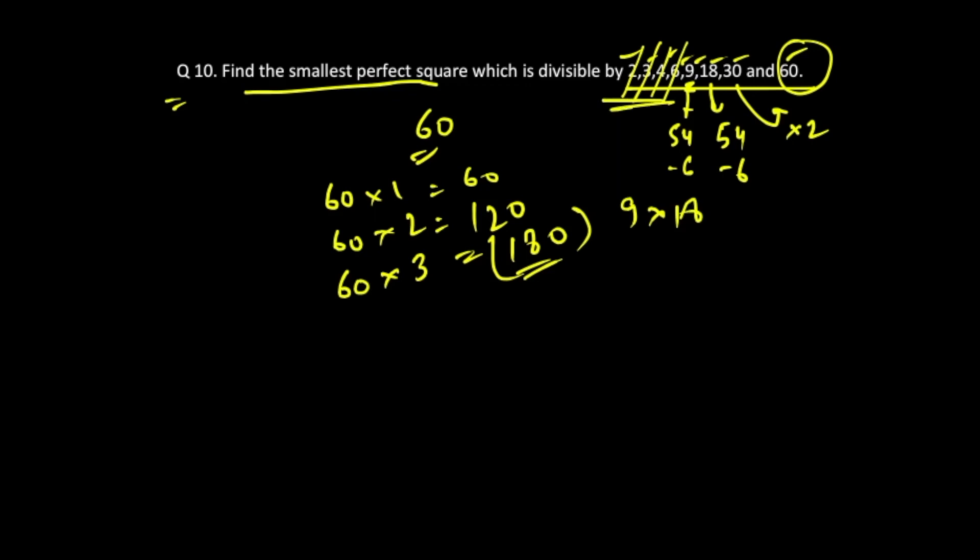But whether or not it is a perfect square? 180 is not a perfect square because 15 square is 225, 14 square is 196, and 13 square is 169. So it is falling somewhere between 13 square and 14 square. It is not a perfect square.